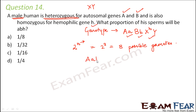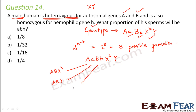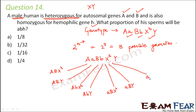The 8 possible gametes are: (1) AB X^H, (2) AB Y, (3) Ab X^H, (4) Ab Y, (5) aB X^H, (6) aB Y, (7) ab X^H, and (8) ab Y. Each gamete carries one allele of A, one allele of B, and either X^H or Y.